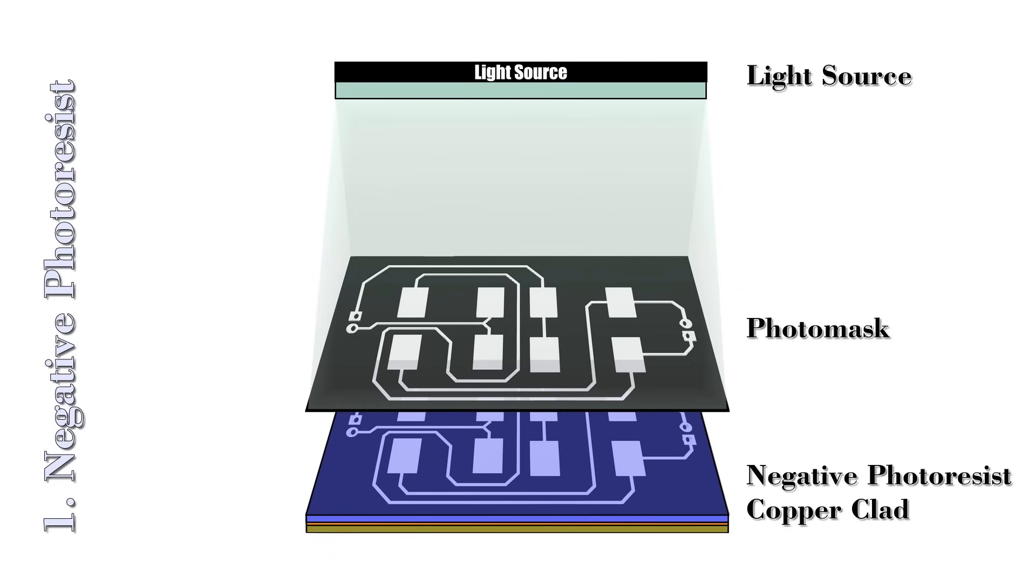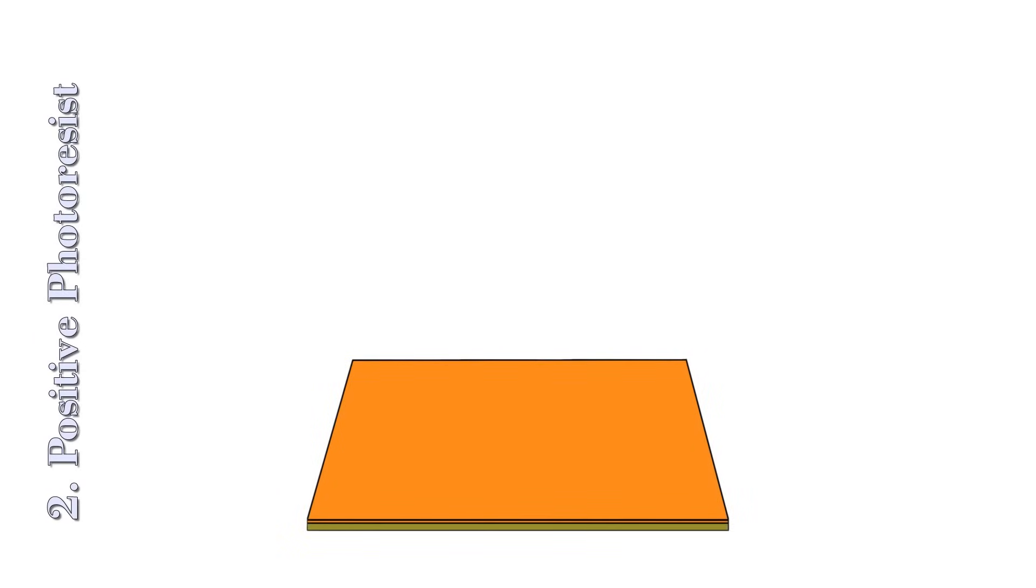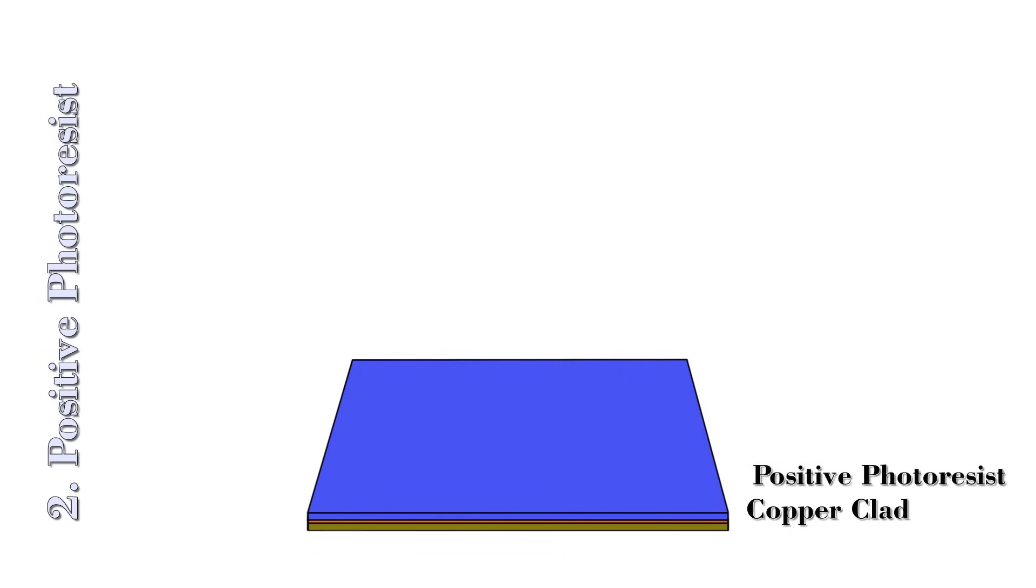Now let's shift our focus to positive photoresist. Similar to negative photoresist, we apply the positive photoresist to the copper clad material. Positive photoresist exhibits the opposite behavior. When light falls on it, it becomes softened.